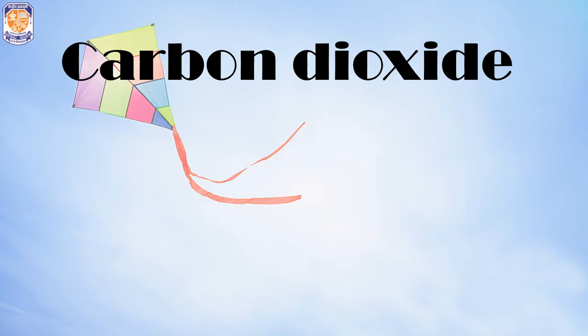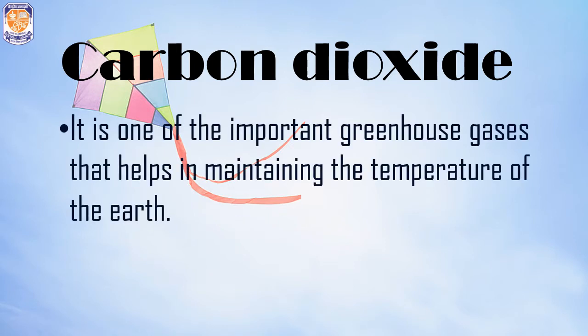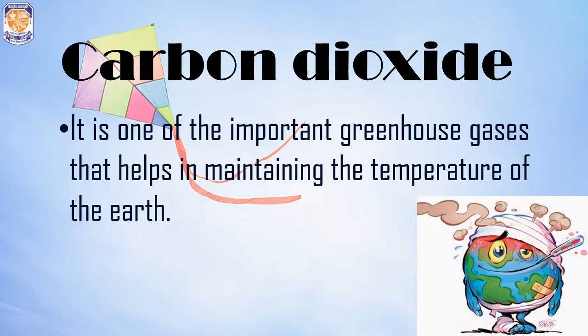The third important gas in our atmosphere is carbon dioxide. It is one of the most important greenhouse gases that help maintain the temperature of the earth. Greenhouse gases trap heat in our atmosphere — in a way, they are good gases, because without them our planet would become too cold at night. But too much carbon dioxide can cause global warming, a major problem of the 21st century.